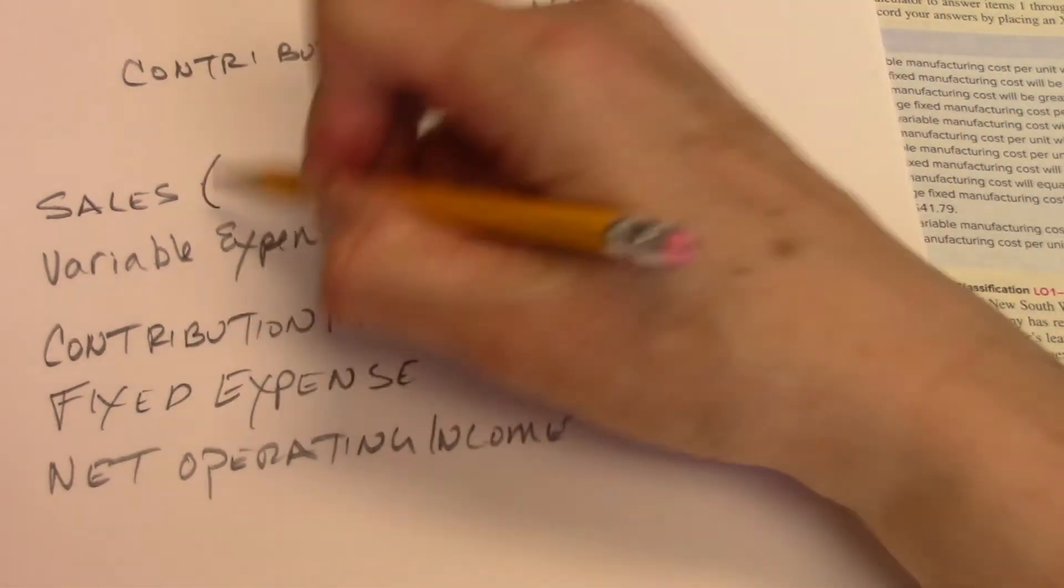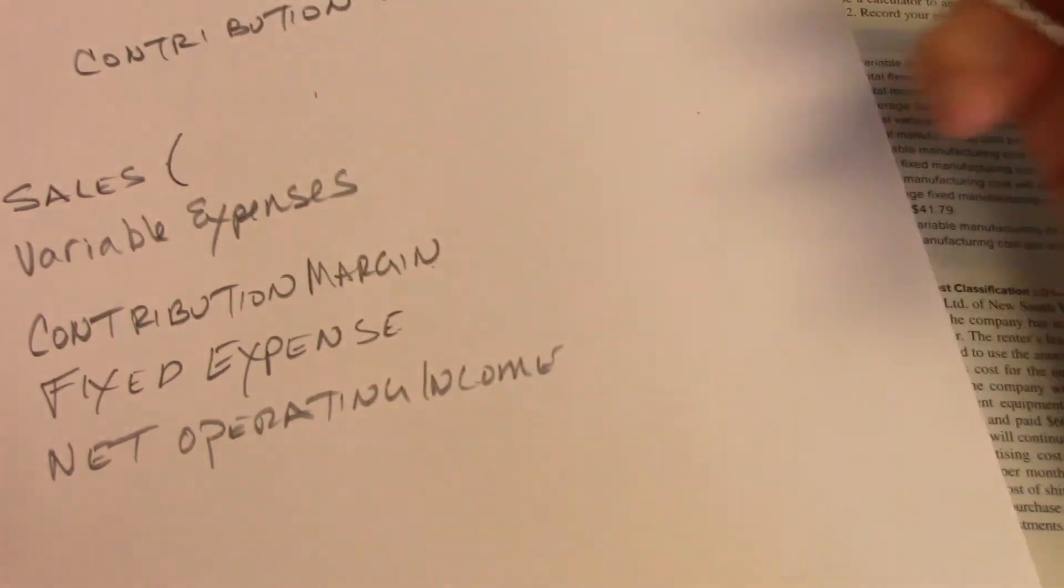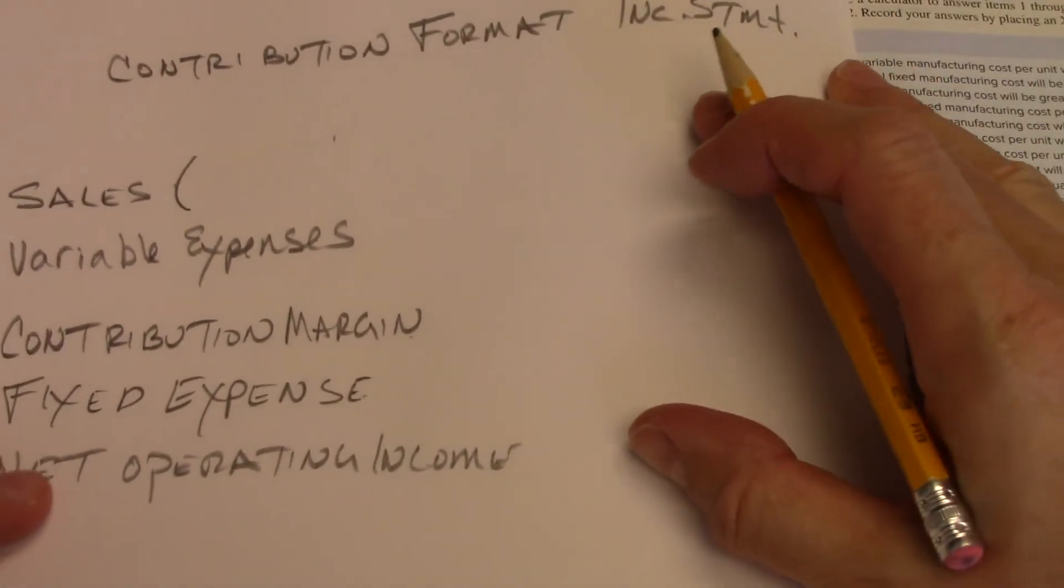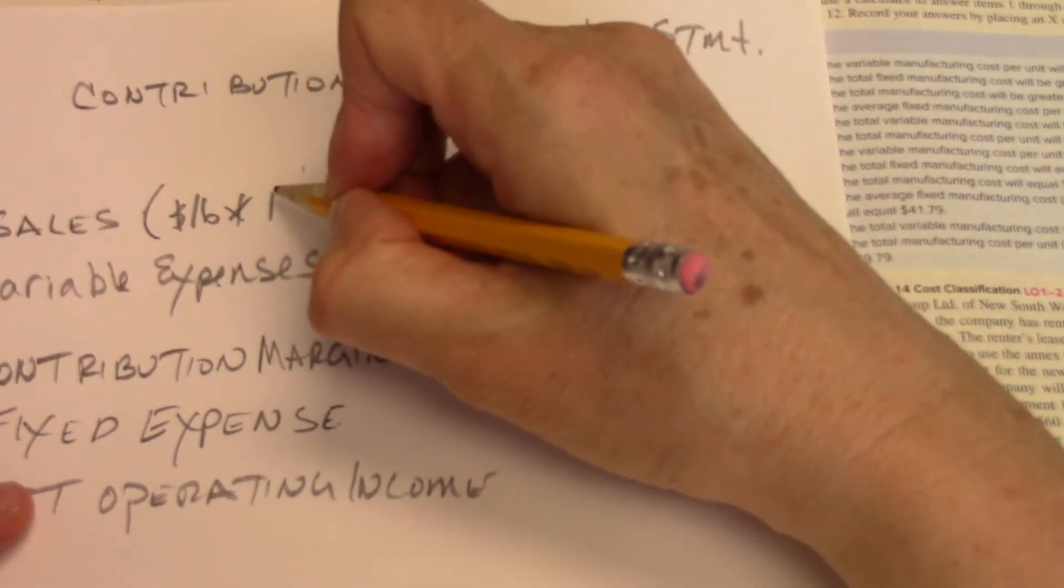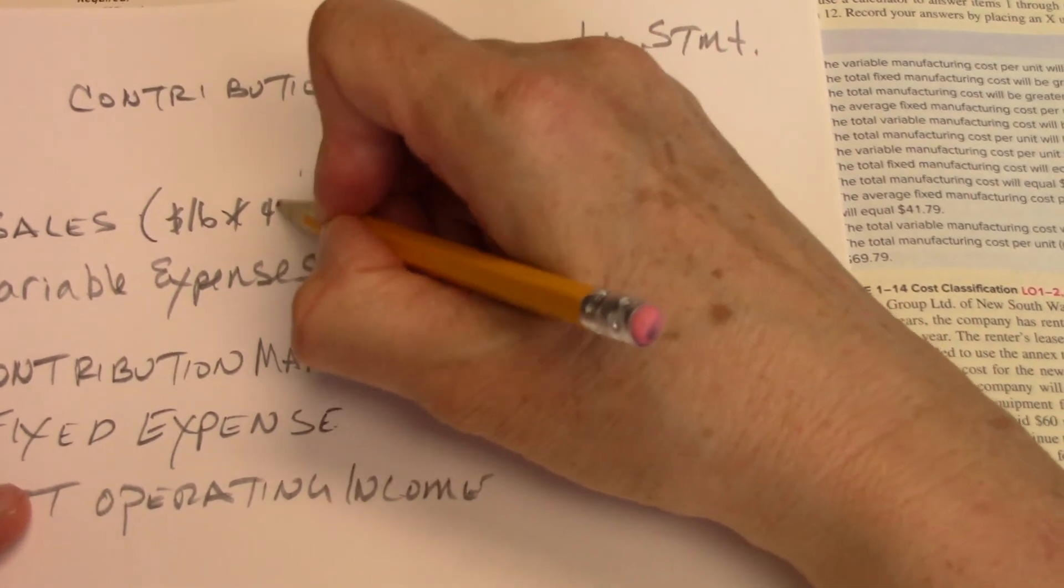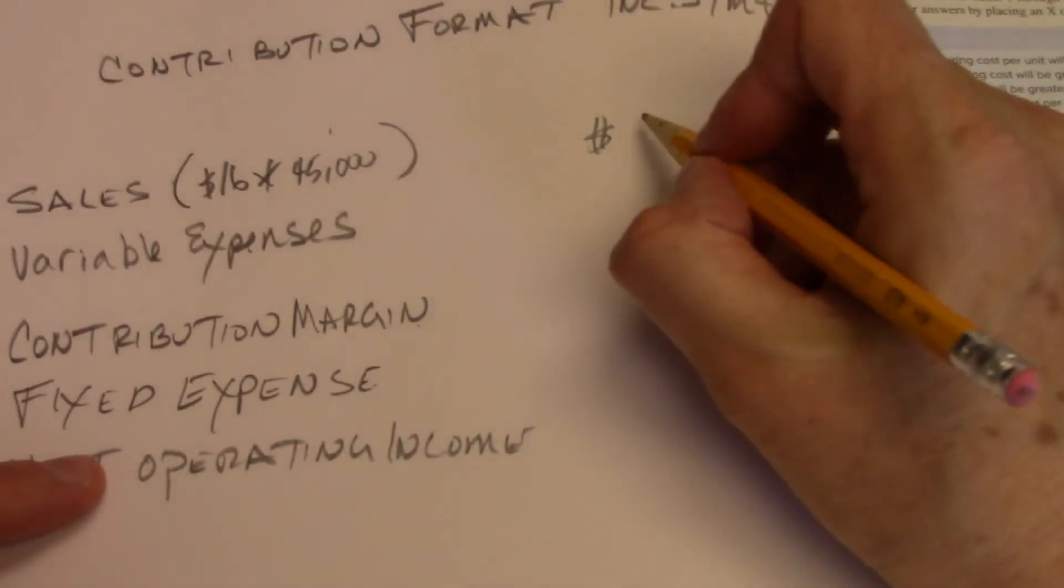I mean, you could do a contribution format income statement with per unit cost, certainly, but this is totals. So sales, what did they tell us? $16 and 45,000. So sales revenue is price times number of units sold, and that ends up being $720,000.